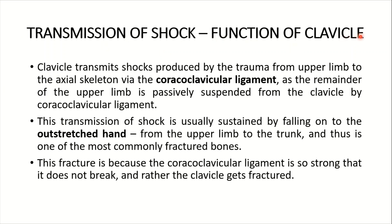The clavicle acts as a strut suspending the upper limb from the trunk and transmits shock from the upper limb to the axial skeleton via the coracoclavicular ligament, as the upper limb is passively suspended from the clavicle by this same ligament. This shock is usually sustained by falling onto an outstretched hand, making the clavicle one of the most commonly fractured bones. The coracoclavicular ligament is so strong that it does not break — instead, the clavicle itself fractures.